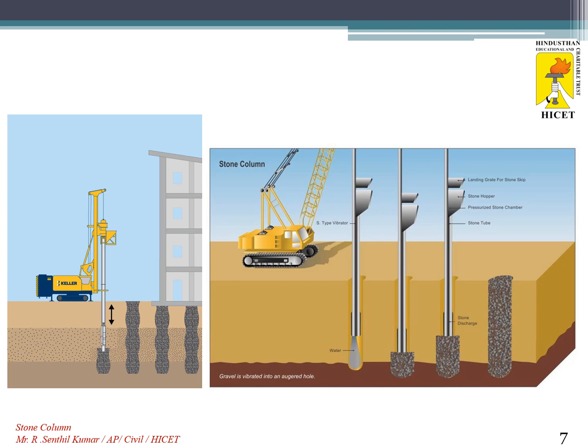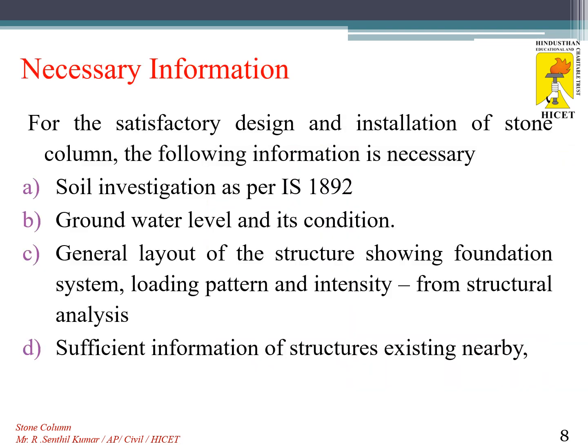For satisfactory design and installation of stone columns, the following information is necessary: soil investigation as per IS 1892, groundwater level and its condition — noting where the groundwater table is located from the ground surface — and a general layout of the structure showing the foundation system, loading pattern, and intensity from structural analysis.